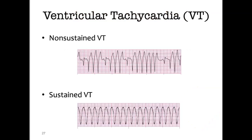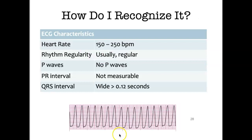Ventricular tachycardia is a lethal rhythm. V-tach is present when there are three or more PVCs in a row and the rate is greater than 100 beats per minute. A client may be conscious and able to tolerate V-tach briefly if some perfusion is occurring, but that is very rare. Once the client becomes unconscious and no longer has a pulse, immediate intervention is required. Heart rate is usually 150 to 250 beats per minute, rhythm regularity is usually regular, there are no P waves, the PR interval can't be measured, and the QRS tends to be wide.